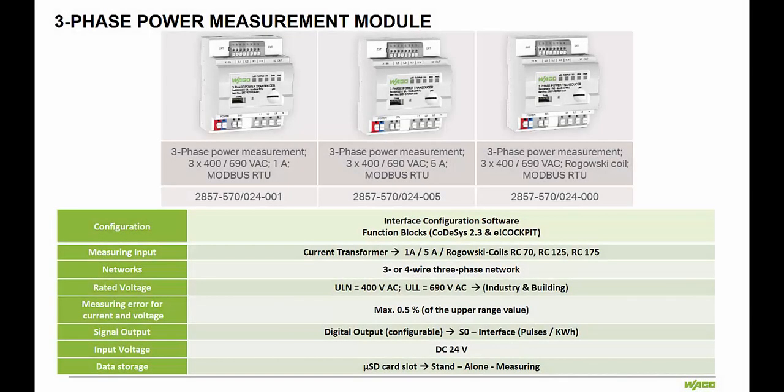The Wago Power Measurement Module has three variations to select from. The 001 version, which is a three-phase 400 to 690 volt option for use with 1A current transformers. The 005 version, which is a three-phase 400 to 690 volt option for use with 5A current transformers. And a version for use with Rogowski coils.